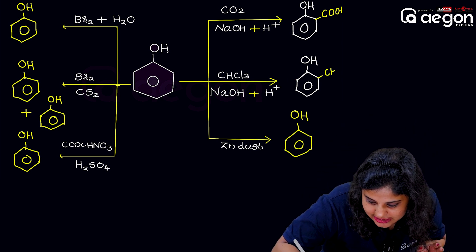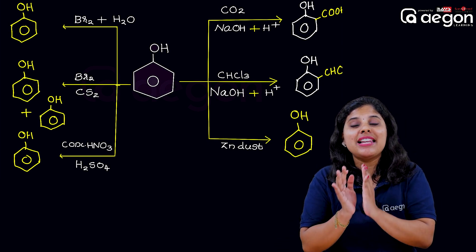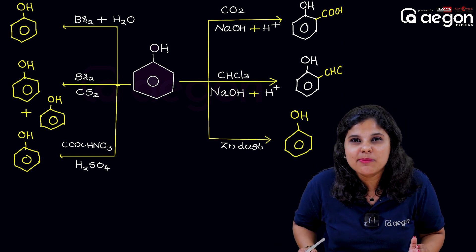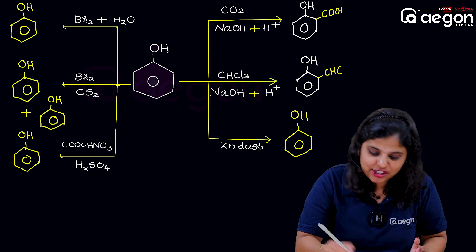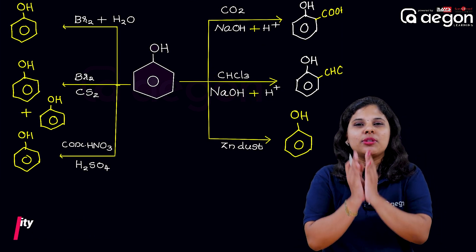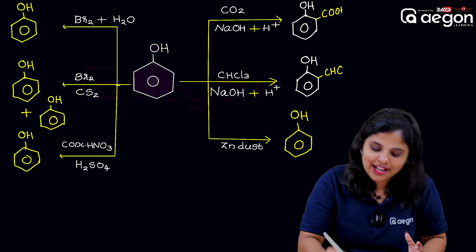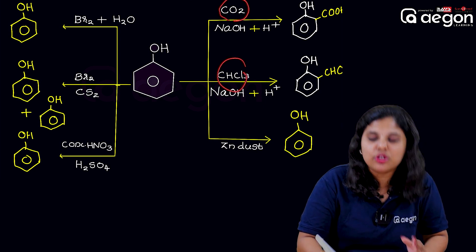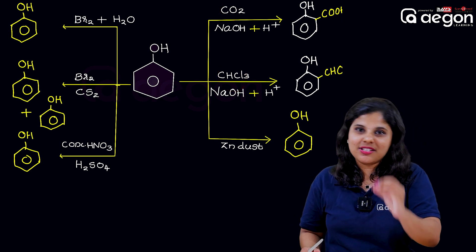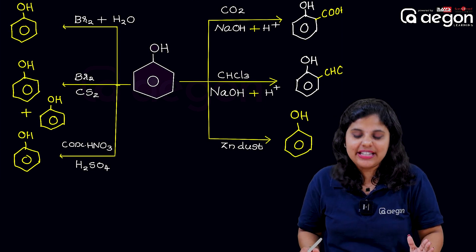The product is known as salicylaldehyde and the reaction is known as the Reimer-Tiemann reaction. For the Reimer-Tiemann reaction and the Kolbe reaction — the question involves carbon dioxide and chloroform. This gives salicylic acid and salicylaldehyde.